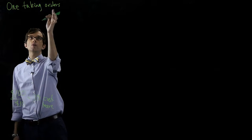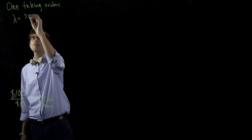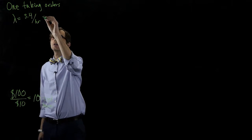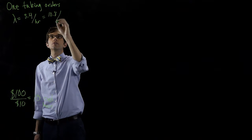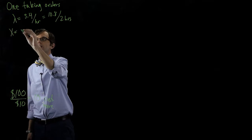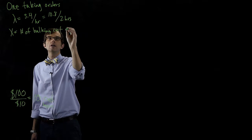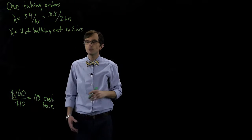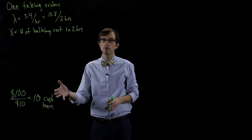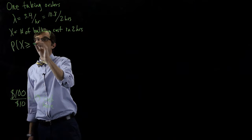With one employee taking orders, the rate of customers leaving without ordering was 5.4 customers per hour. Since we want to answer a question about two hours, that would be 10.8 customers in two hours. Let's define a random variable X as the number of balking customers in two hours. We want to know what's the probability that ten or more customers leave in two hours — that is, the probability that X is greater than or equal to ten.